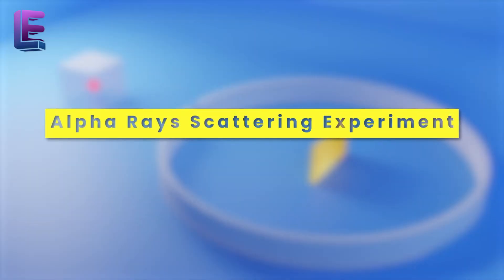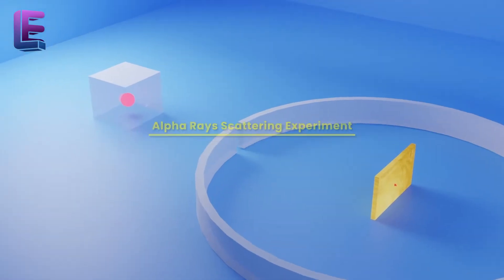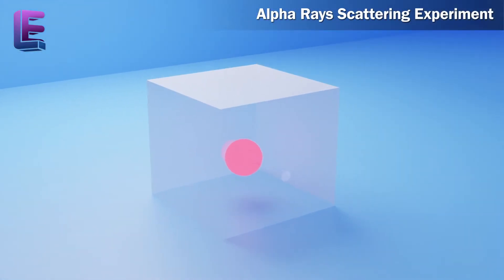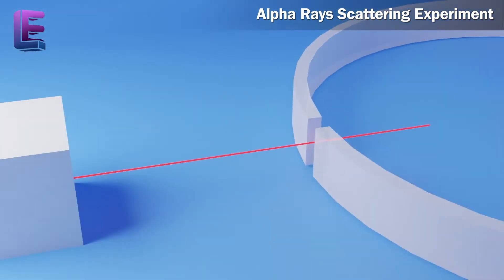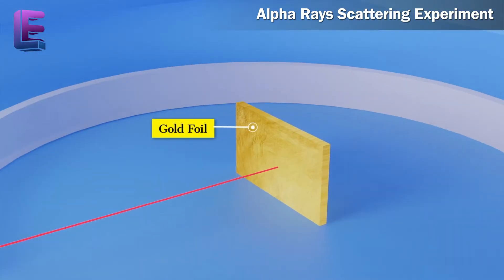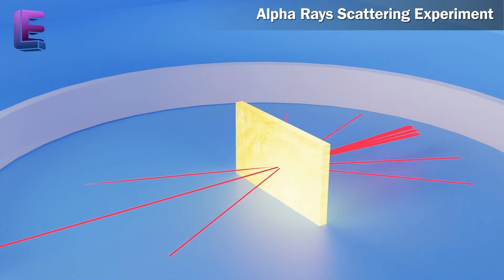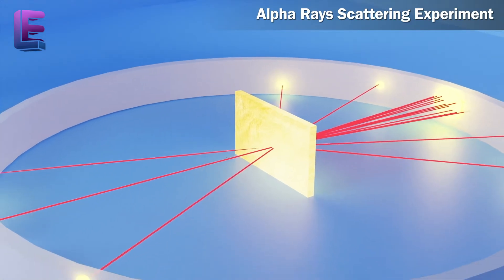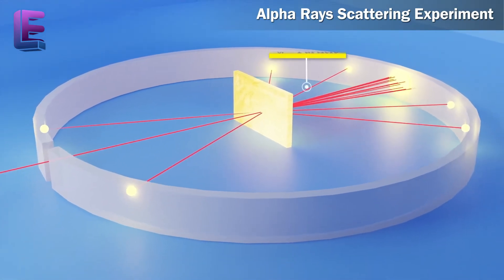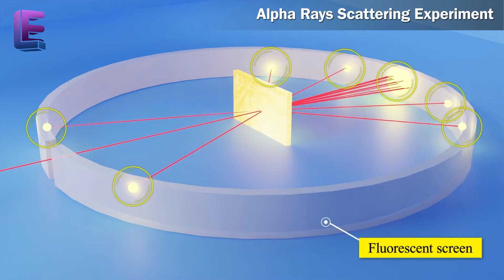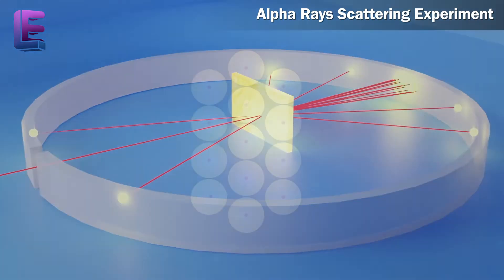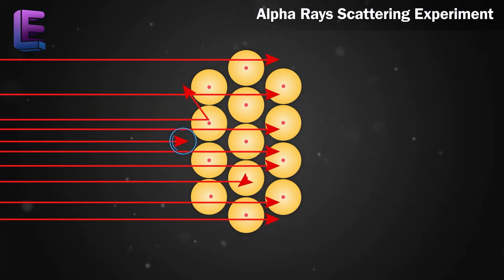Alpha Rays Scattering Experiment. In this, alpha rays emanating from a radioactive material were concentrated onto a thin foil. Few of them passed straight through the foil, others were bent at various angles. These alpha particles, once bent, illuminated a fluorescent screen. Few particles returned at the exact same angle.